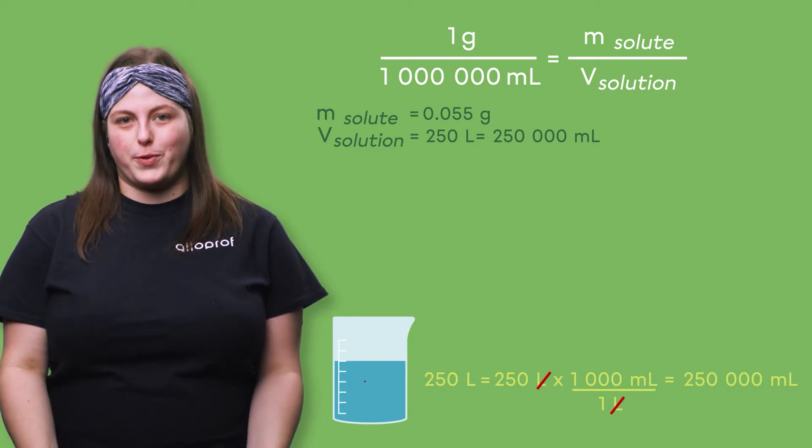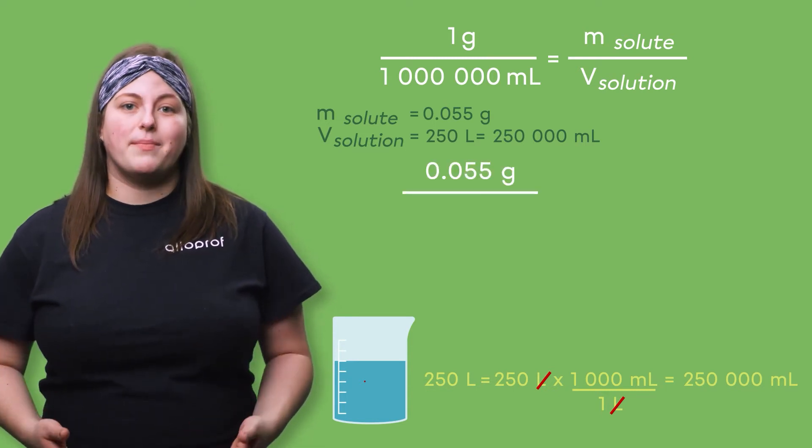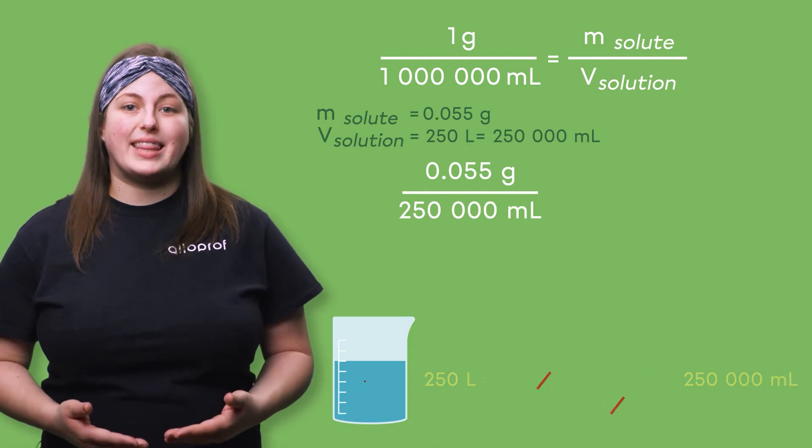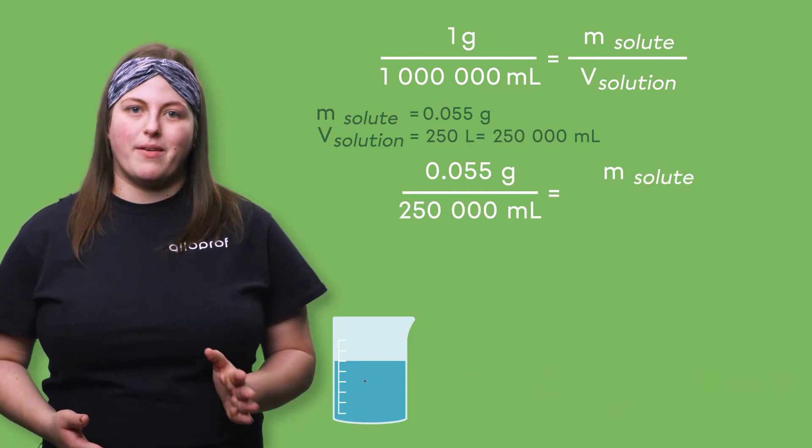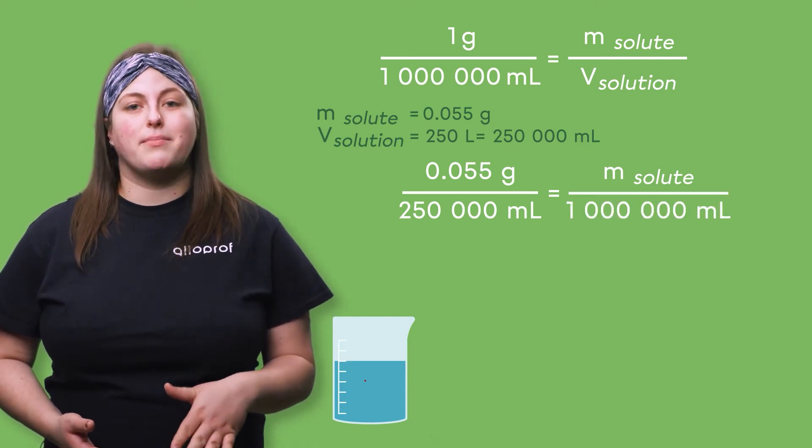250 liters is equivalent to 250,000 milliliters. We get the following ratio: 0.055 grams divided by 250,000 milliliters is equal to the mass of the solute we are looking for divided by 1 million milliliters.